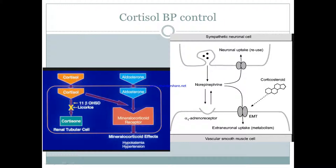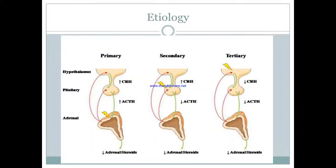One of the board questions on USMLE Step 1 involves a patient eating licorice — what would be the effect? The effect would be hypertension, because licorice inhibits the pathway from cortisol to cortisone. This means more cortisol gets shunted toward the mineralocorticoid receptor, increasing its effects.